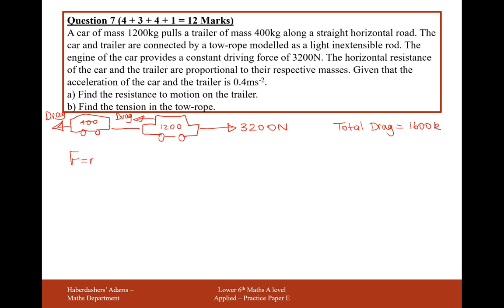So what we need to do now is insert these values into F equals ma. The driving force forward is 3,200. The drag force that's pulling us back is 1,600 times k. And this equals the mass, 1,600, times our acceleration, which is 0.4 meters per second squared. Simplifying this formula, we get k is 1.6.